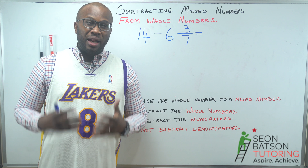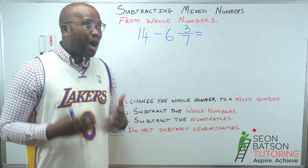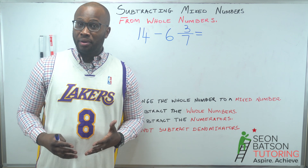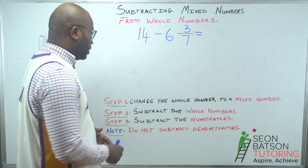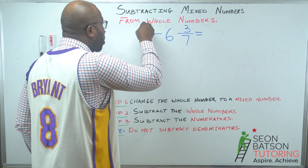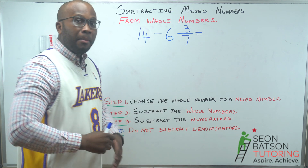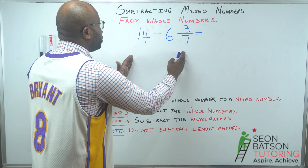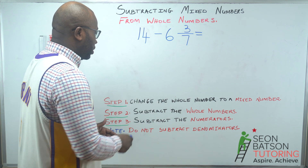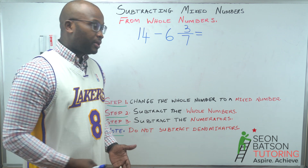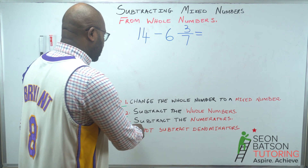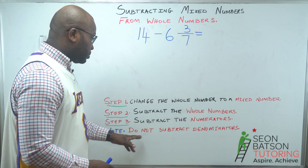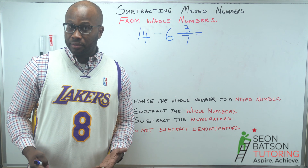I am going to teach you three very simple steps to master how to subtract a mixed number from a whole number. Step one: change the whole number to a mixed number. Step two: subtract the whole numbers. Step three: subtract the numerators. We do not subtract the denominators — the denominator stays the same.